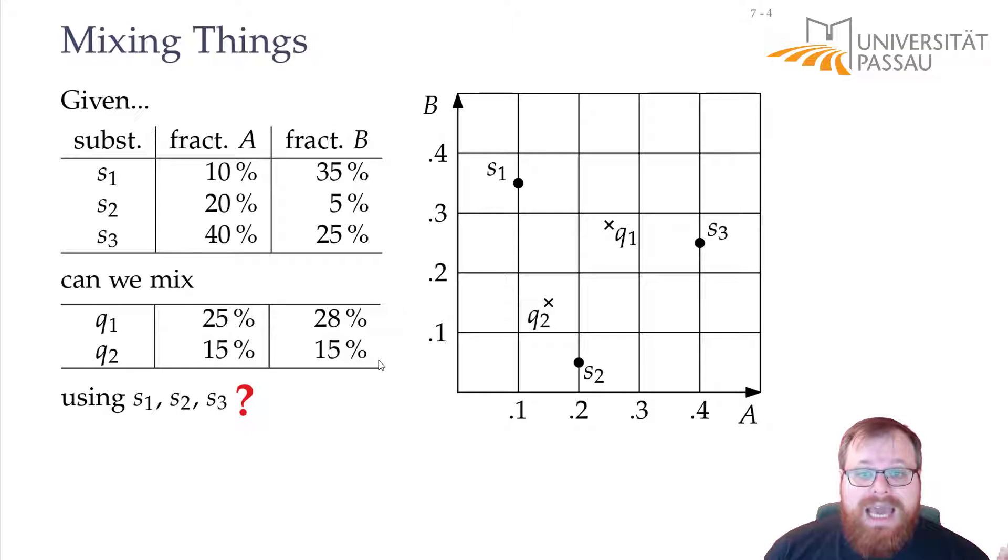Now, what do you think happens if we only mix substances S1 and S2? If we only use substance S1, we get exactly this point. If we only use S2, we get this one. If we use any combination of them, then we get all the points that lie on this straight-line segment. The same way, if we only use S1 and S3, we get all the points on this straight-line segment, and if we only use S2 and S3, we get all these points.